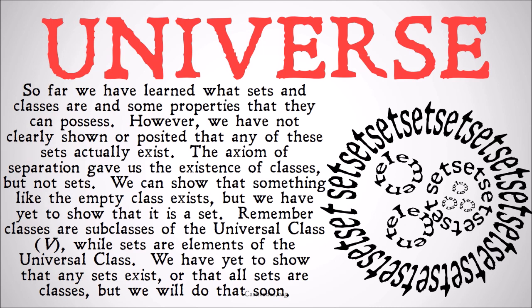So far we've learned about what sets and classes are and some properties that they possess or may possess. However, we've not clearly shown or posited that any of these sets actually exist. The axiom of separation gives us the existence of classes — remember that existence part is for B, the class, not for X, the set — but not sets. We can show that something like the empty class exists, but we have yet to show that it is a set. I've been using the term set and class relatively interchangeably so far, with the understanding that most of these properties apply to both, but we haven't shown that any sets really exist. Remember: classes are subclasses of the universal class V, while sets are elements of the universal class. We have yet to show that any sets exist, or that all sets are classes.